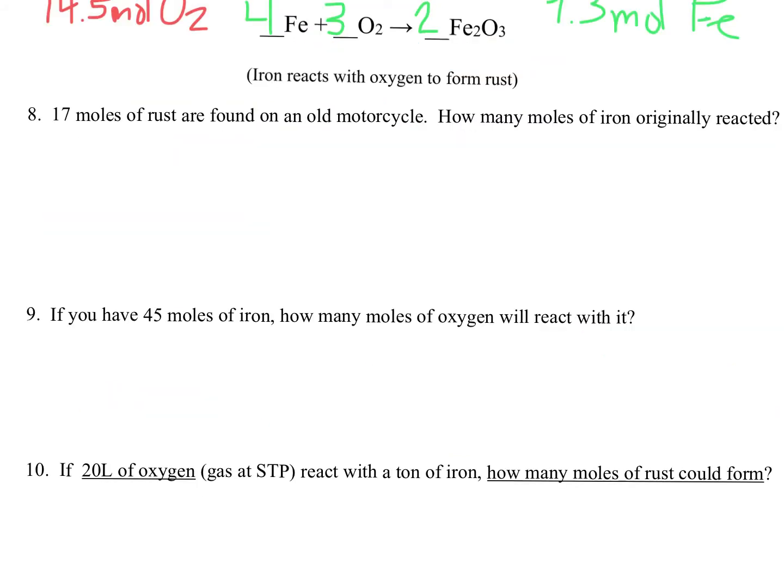Taking a look at number 8. You've got 17 moles of rust are found on an old motorcycle. So if 17 moles of rust form, they want to know how many moles of iron must have originally reacted. So that means we're going to start with 17 moles of rust. And rust, as we can see, is Fe2O3. Just have to use our context clues.